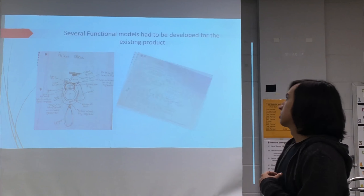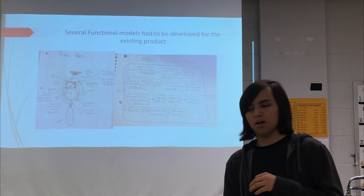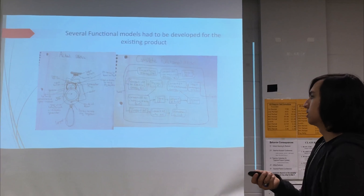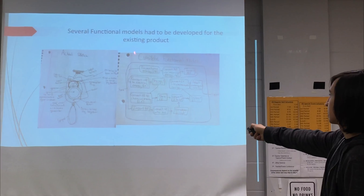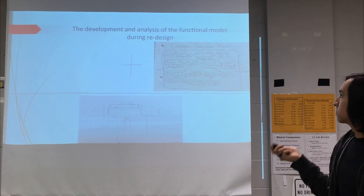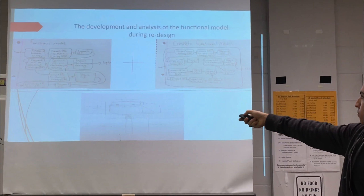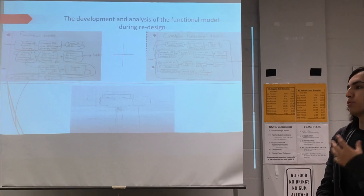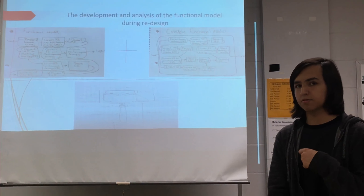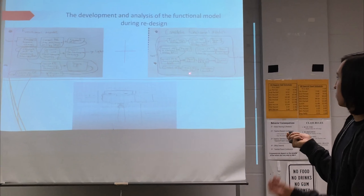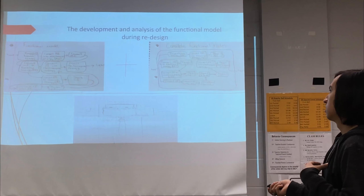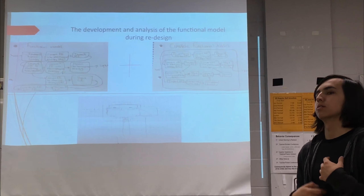We created several functional models and sketches before and after the disassembly process, which helped us generate more ideas and better understand the exact energy flow that the pig light went through. This is my functional model pre-disassembly — I had forgotten to place the button, or the on-and-off switch, in this one. In the updated version, I added it, and it also went more in depth with the energy flows, conversions, and storing. This helped us to decide upon our final product.